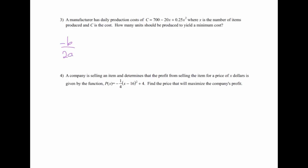The thing that could trip you up is that it's not in the correct order. Instead of a, b, c in order, this is really c, b, and a. So plugging in: negative negative 20 times 2, over 2 times 0.25, which gives me 40. That's the x part of the problem. It asks how many units should be produced to yield a minimum cost — x tells us number of units — so the answer is 40 units.